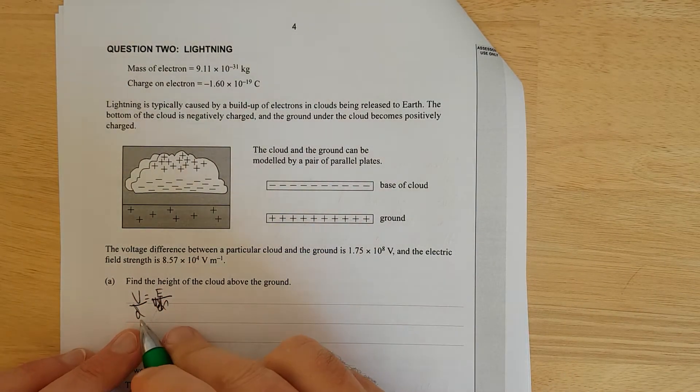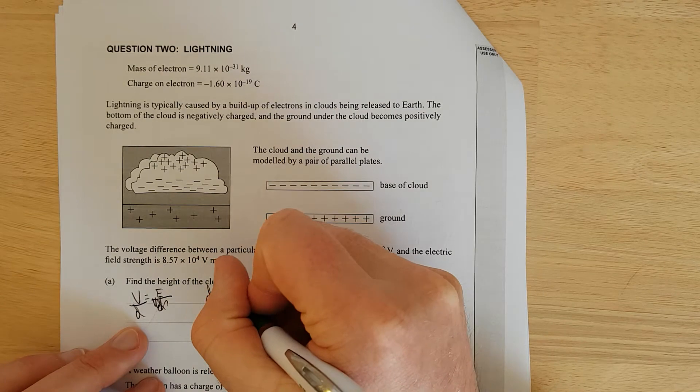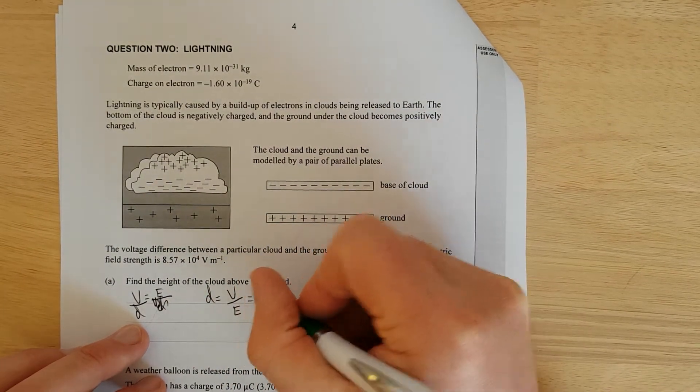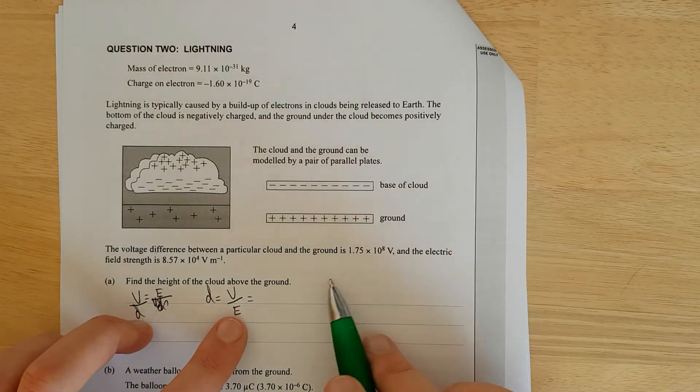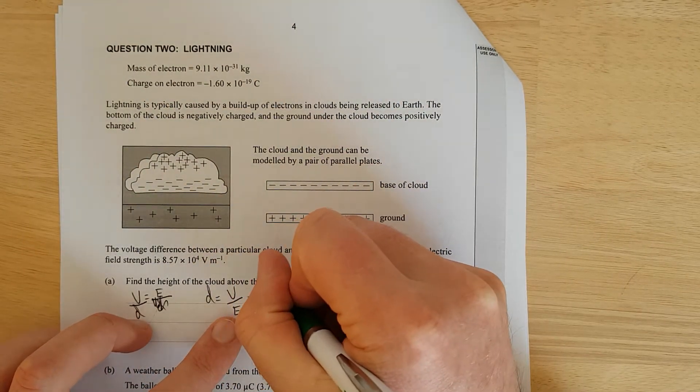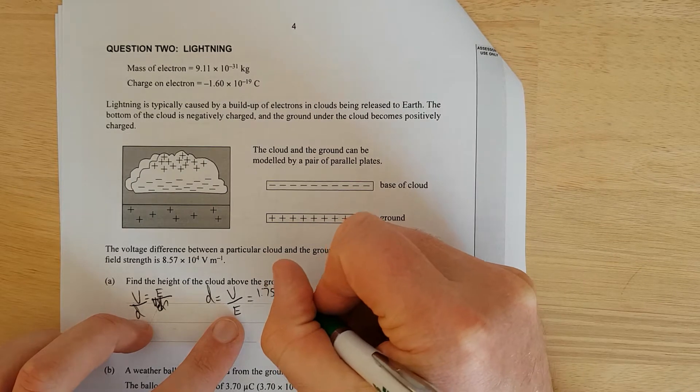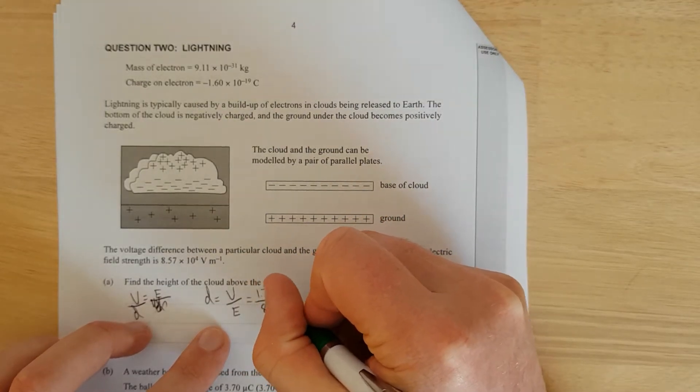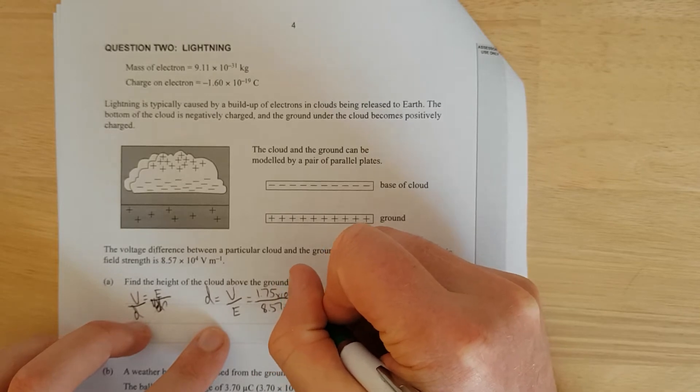In other words, the distance D is equal to the voltage divided by the electric field. And that is going to be equal to 1.75 times 10 to the 8 divided by the electric field 8.57 times 10 to the 4.